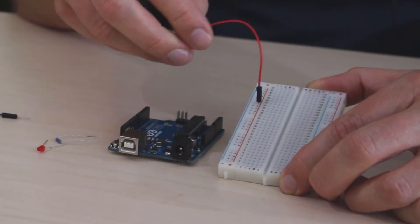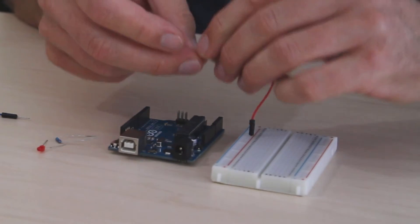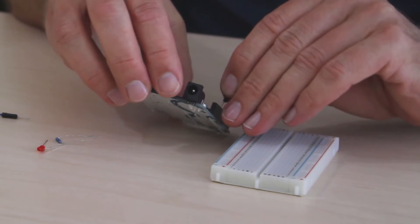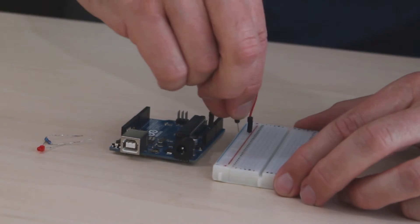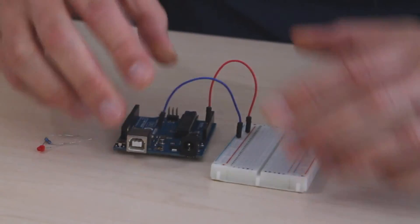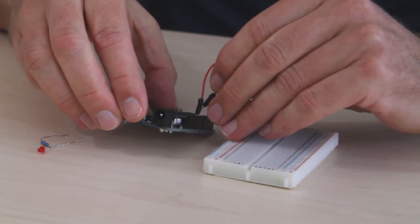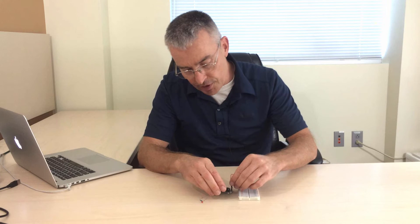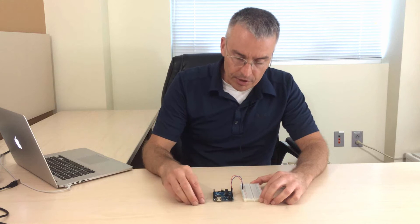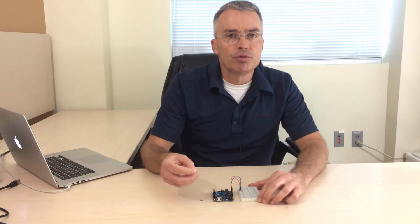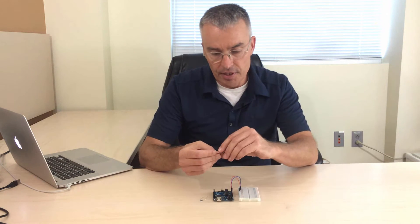So what I can do now is to simply connect one of the red contact points to the 5V pin of the Arduino. And one of the blue contact points to the ground connector of the Arduino. And this gives us a 5V power rail. So we can use this power rail now to run the LED.